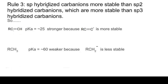Rule number three: sp-hybridized carbanions are more stable than sp2-hybridized carbanions, which are more stable than sp3-hybridized carbanions. Comparing the acidity of an alkyne to an alkane — you might think they'd be similar since both have hydrogen on carbon. But if you take off the H+ from an alkyne, the lone pair and negative charge are on an sp-hybridized carbon. Whereas if you take off the H+ from an alkane, the negative charge is on an sp3 carbon — far less stable. The difference is about 35 pKa units, meaning alkynes are 10 to the 35th times more acidic than alkanes — a huge difference, due to the hybridization of the carbon bearing the lone pair.